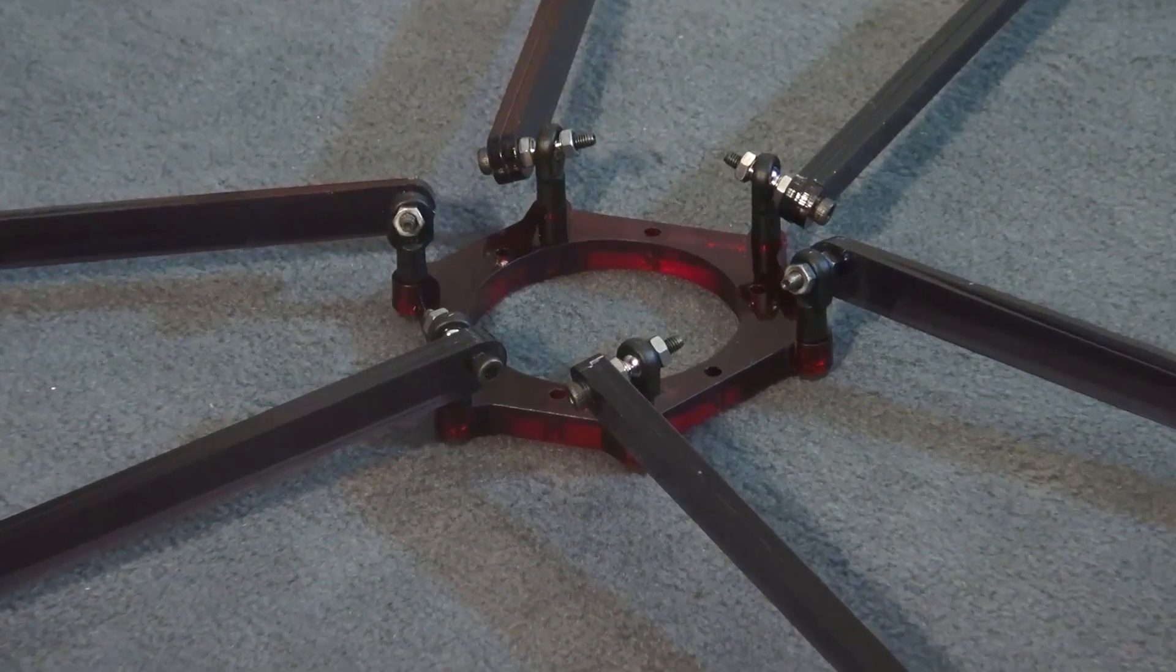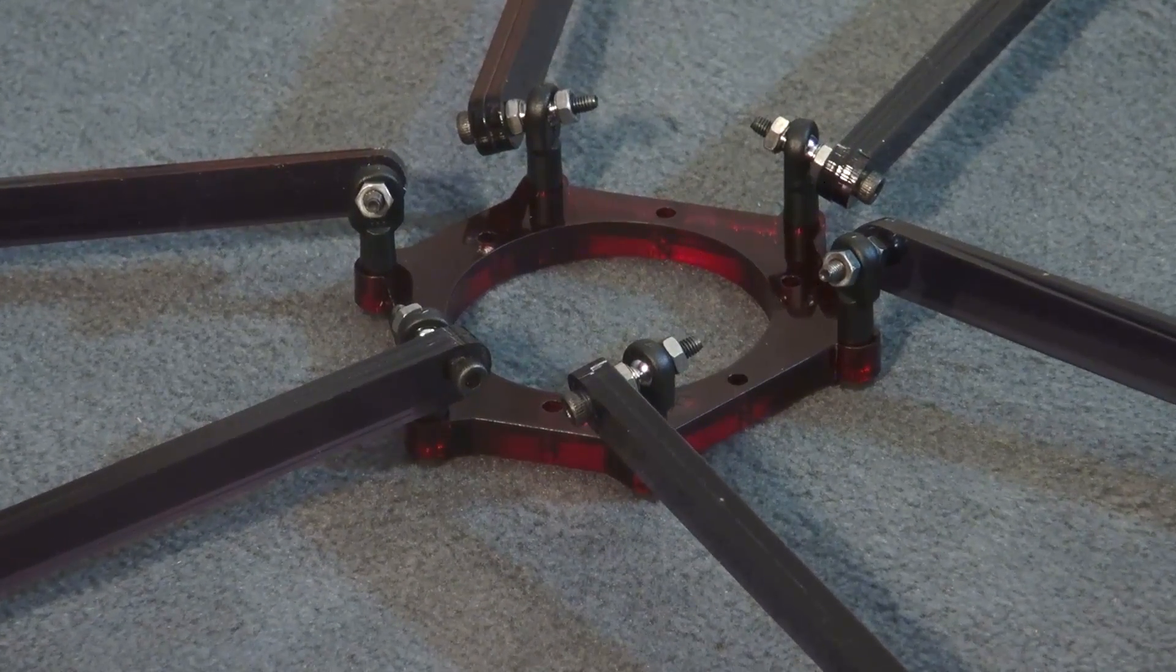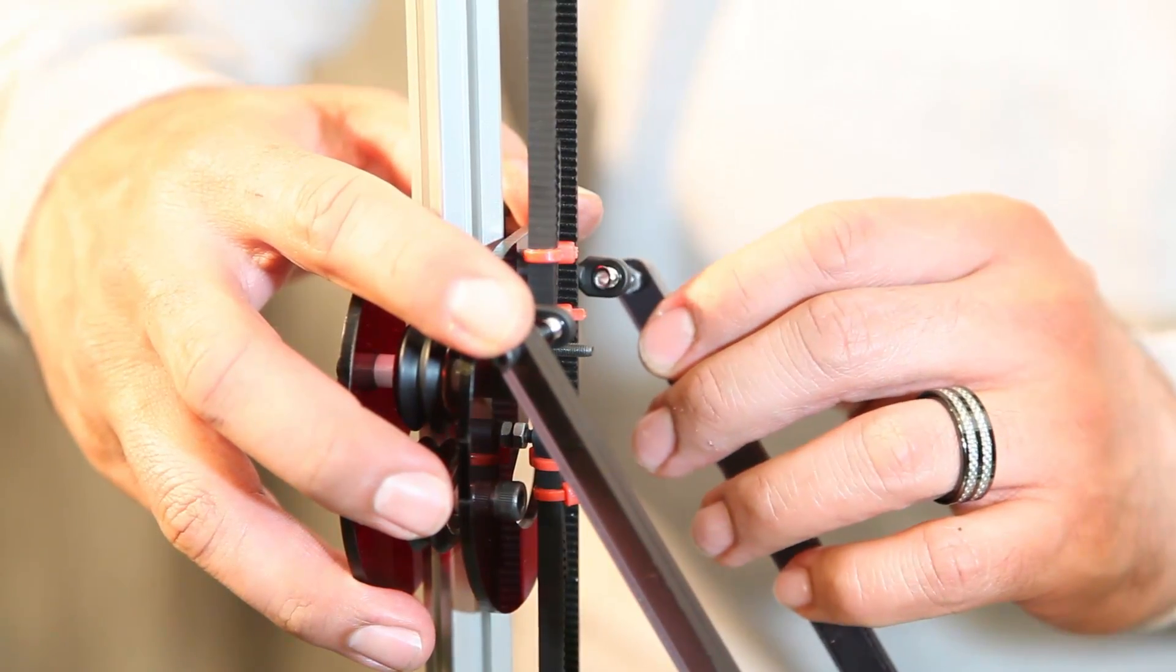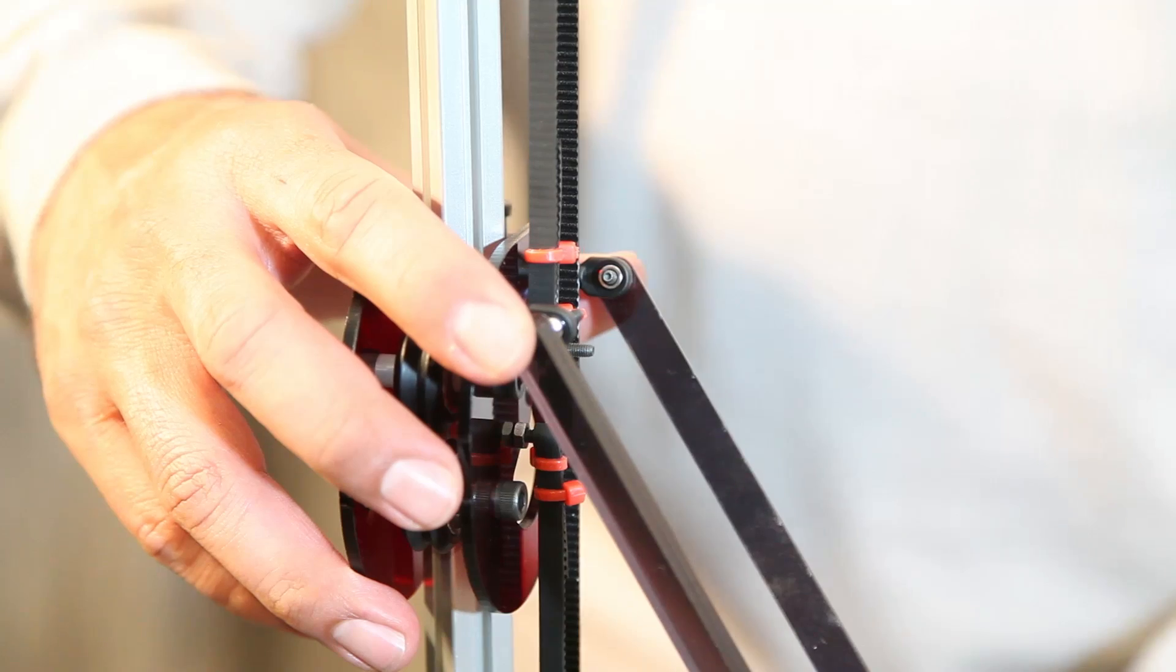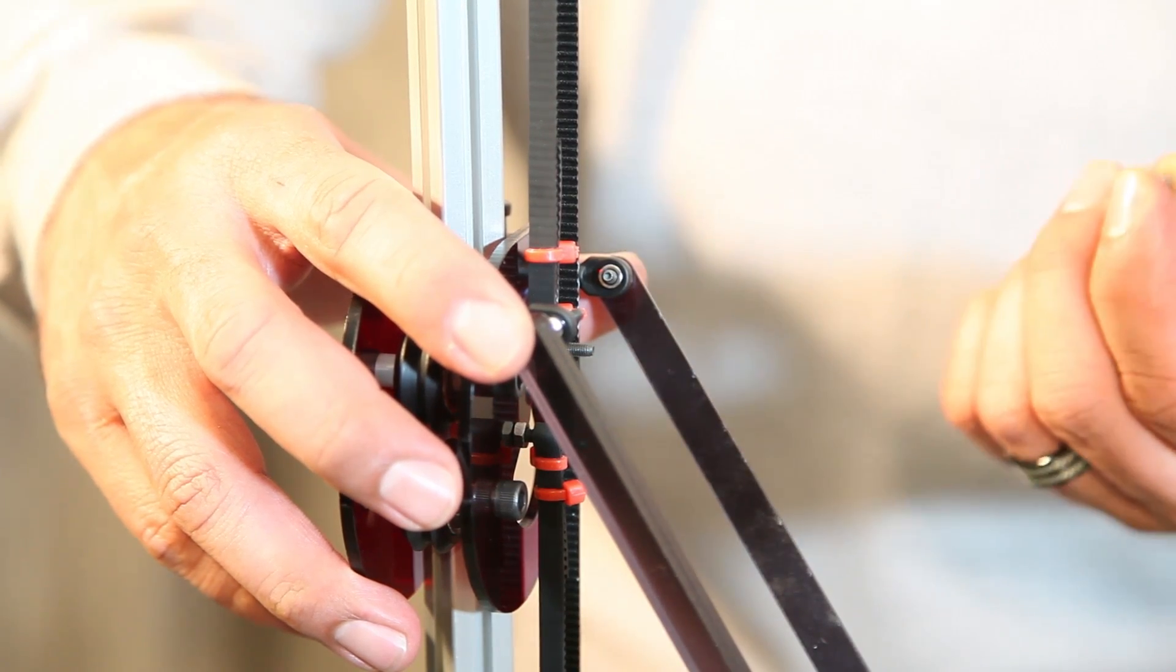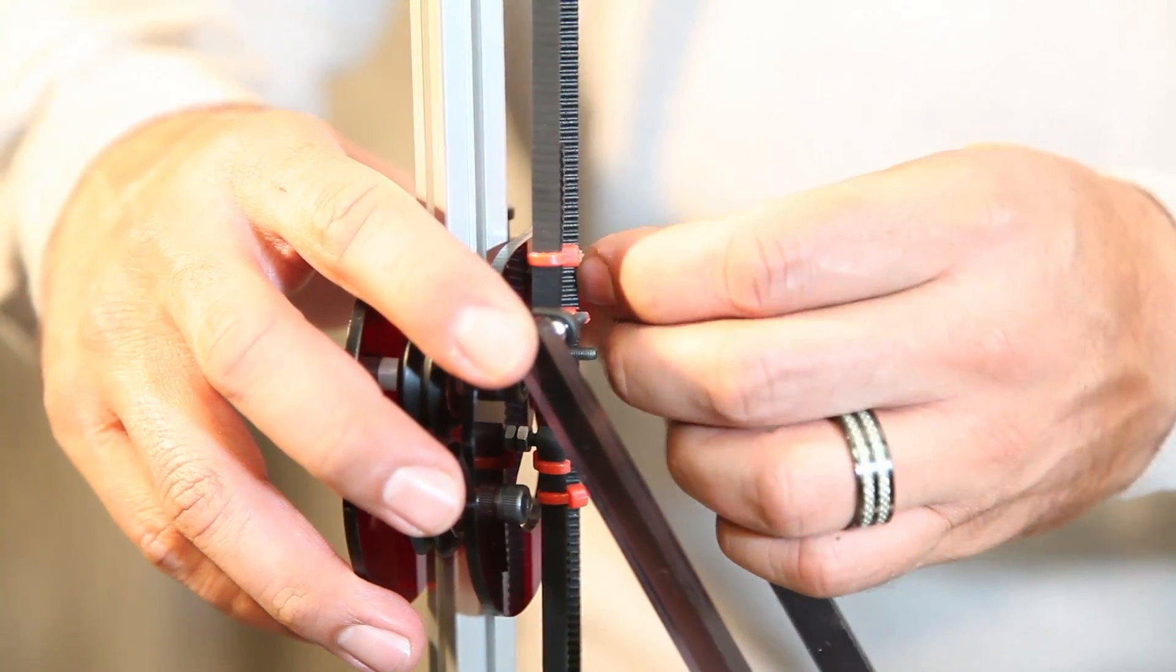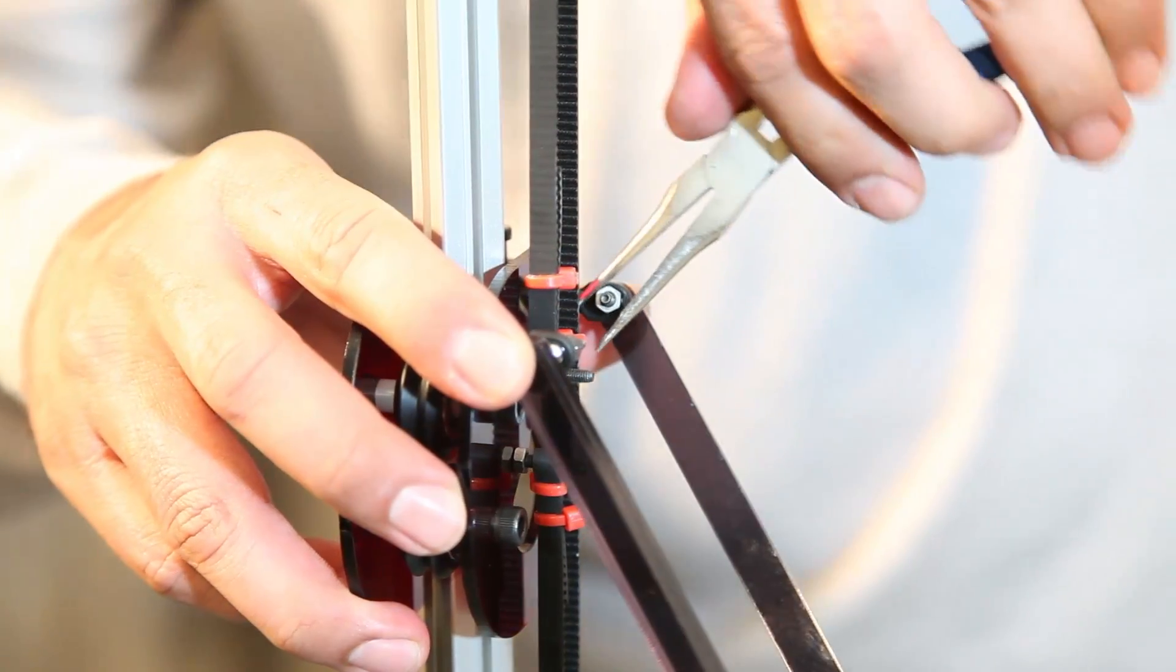Once you assembled all six arms onto the centerpiece, this is what it should look like. Now we're ready to attach the arms to each end. Use another six M3 nuts to attach the arms to the arm bracket.